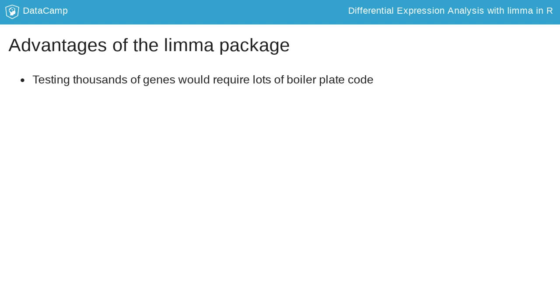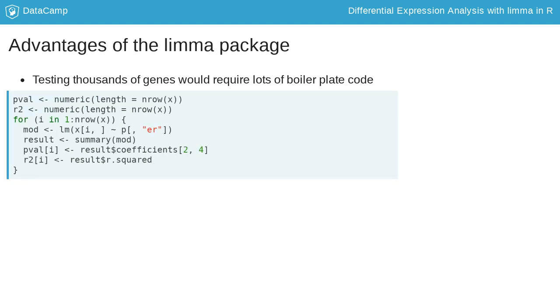First, testing thousands of genes individually would require writing a loop with boilerplate code, like counting variables, thus obscuring the intent of the analysis. Every limma function performs its action on every gene in the dataset, making it easier for you to write the code and easier for others to understand your analysis.